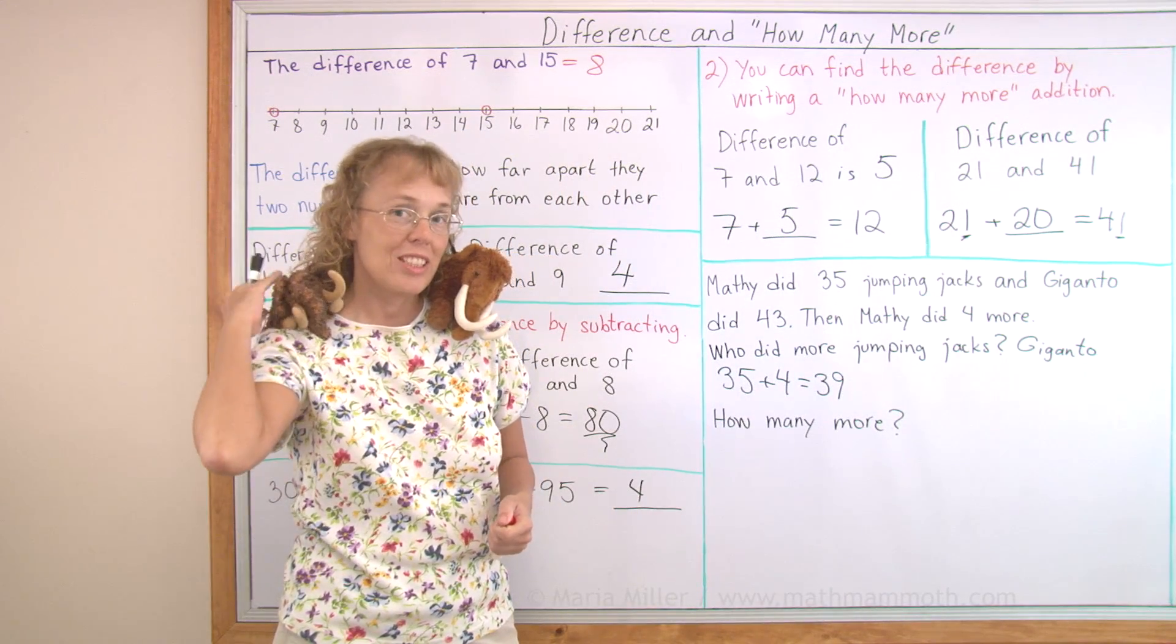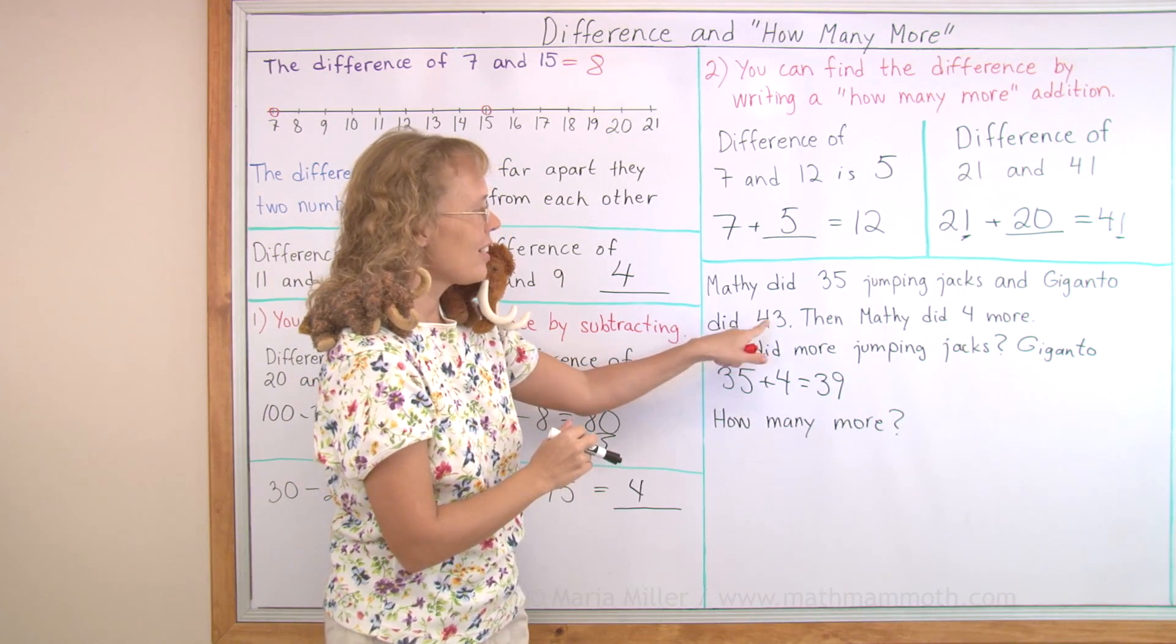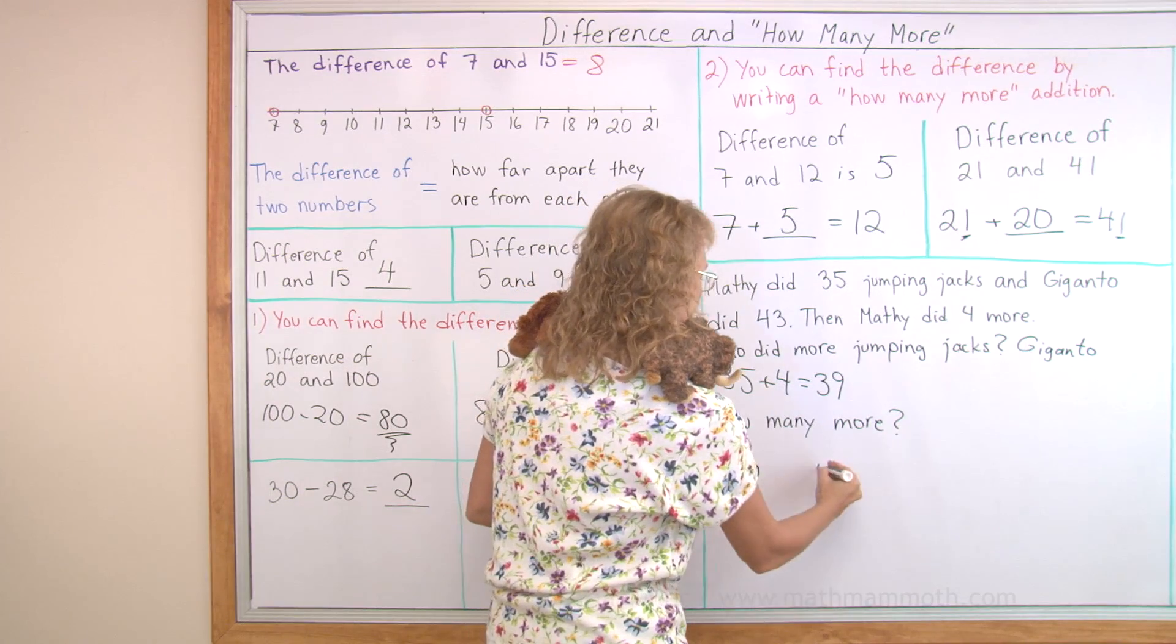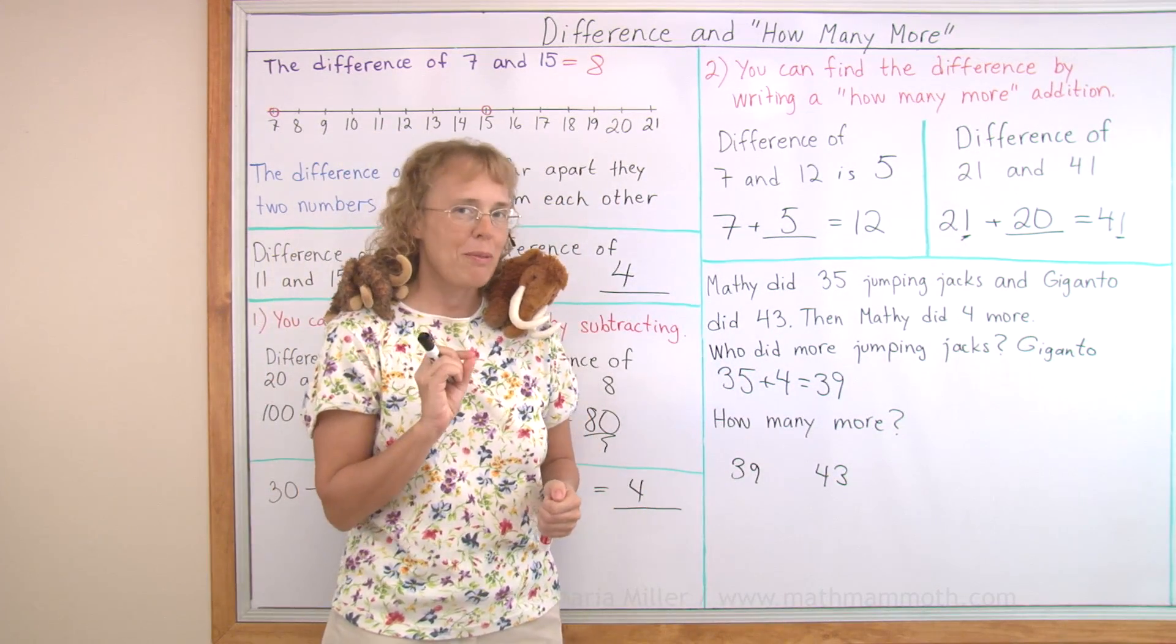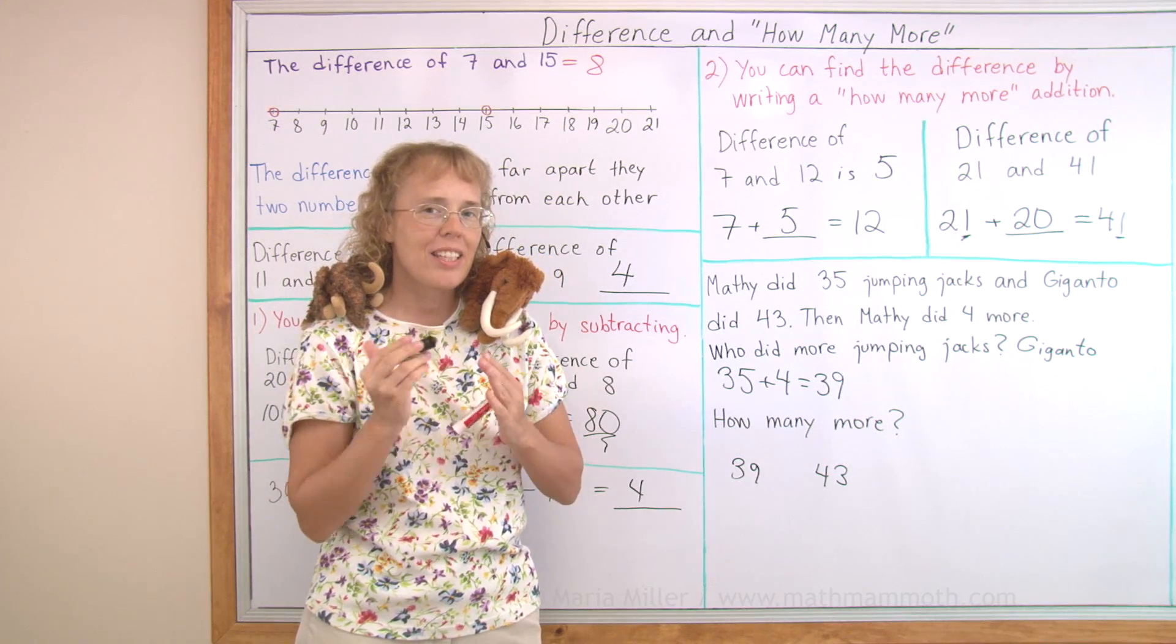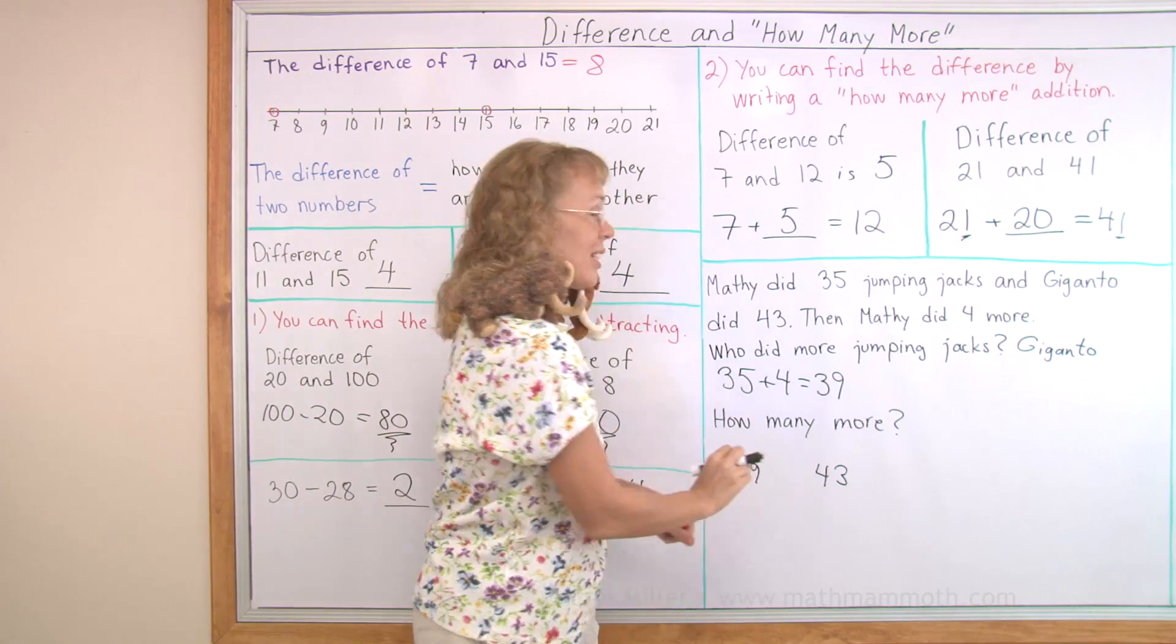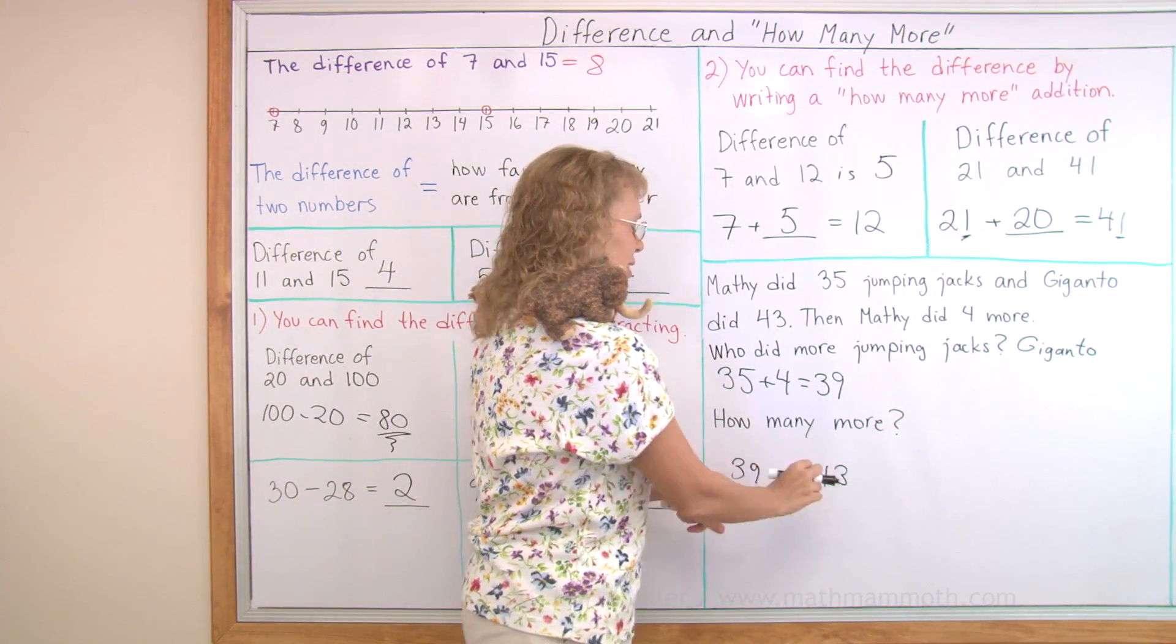How many more? How many more jumping jacks did Giganto do than Mathie? We have 43 and 39. Let me put them here. It is a how many more problem, which we can solve by thinking of the difference. The difference of these two numbers is the answer. So how many steps apart are these two numbers?